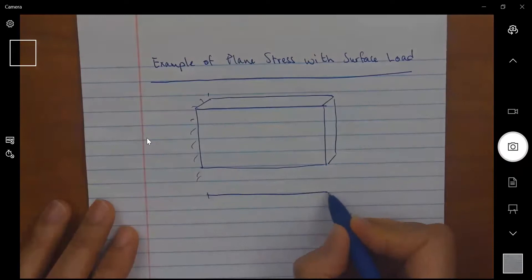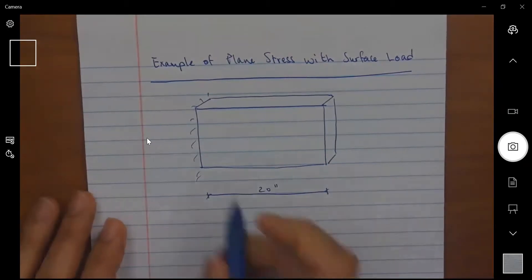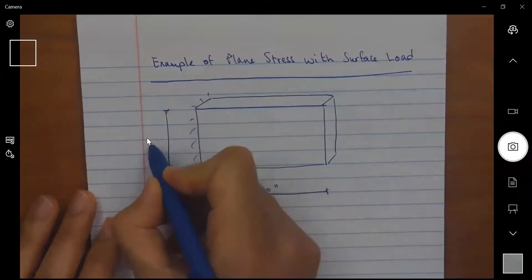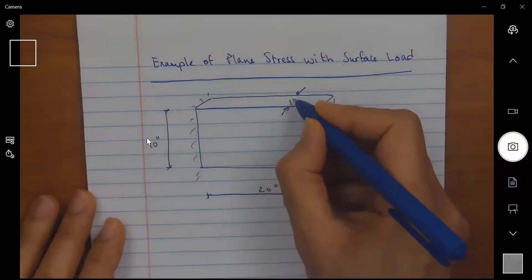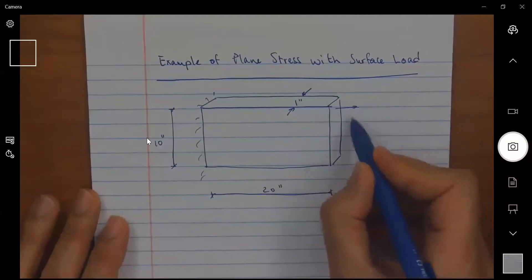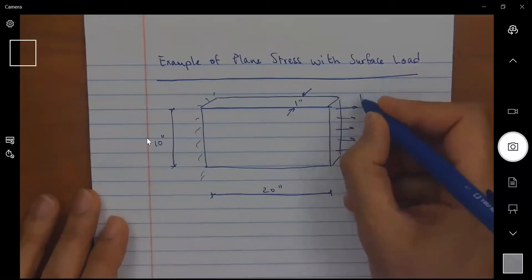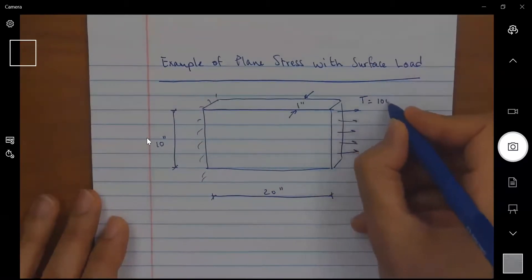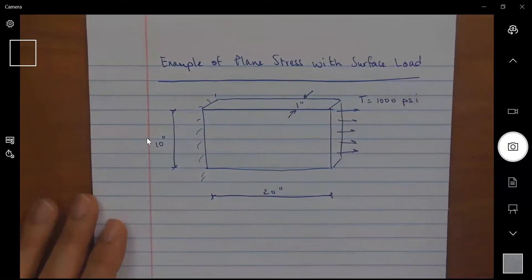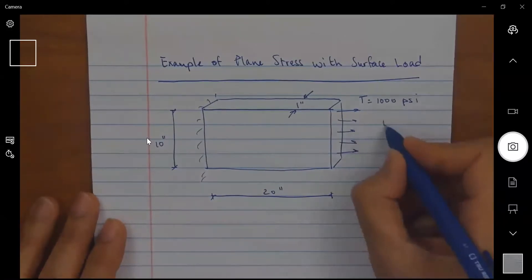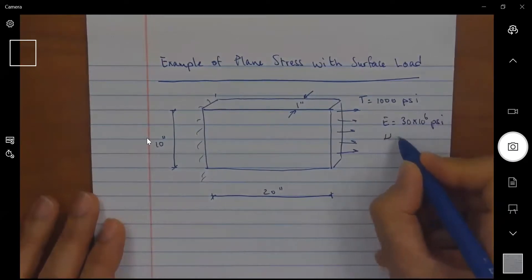We are looking at a plate that is 20 inches long, 10 inches in height, and one inch thick. It has a surface subject to a surface load or traction of 1000 psi — force per length squared. We are given that E is 30 times 10 to the power 6 psi and Poisson's ratio nu is 0.3.